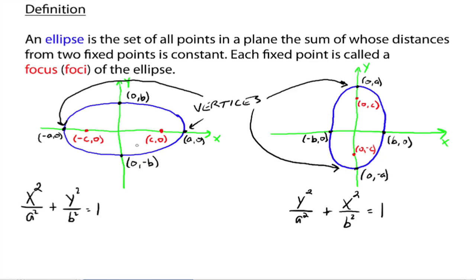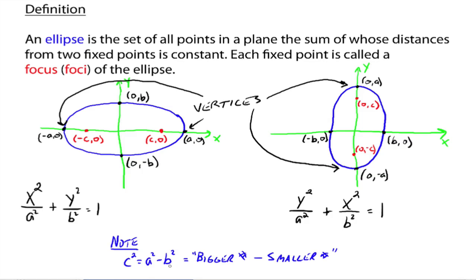Now for c: the way to find c — and again we're not going to derive it — c squared equals a squared minus b squared. But be careful: generally speaking, it's the bigger number minus the smaller number, whether that's a squared or b squared. We want c squared to be a positive number, so just subtract the bigger one minus the smaller one.